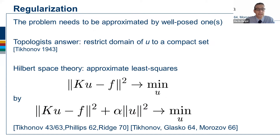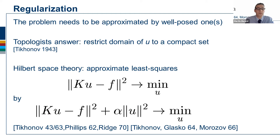Let me go to some historical background. One of the first to consider ill-posed problems was the Russian school, in particular driven by Tikhonov, who was mainly a famous topologist. His answer to recover well-posedness was to restrict the domain of the operator to some compact set, obtaining a form of well-posedness. He also proposed what is called Tikhonov regularization or Tikhonov-Phillips regularization, approximating the least squares problem.